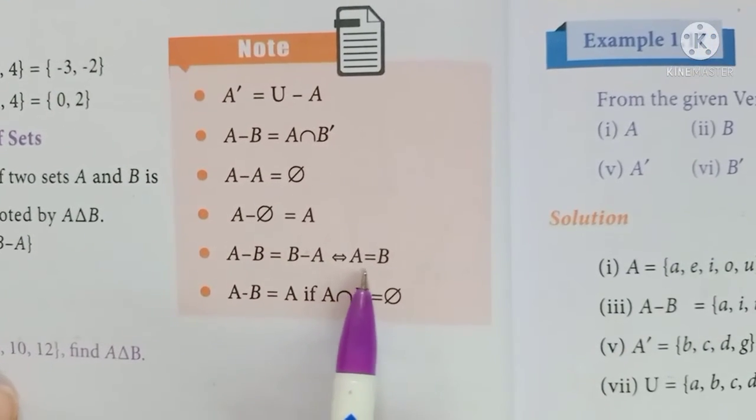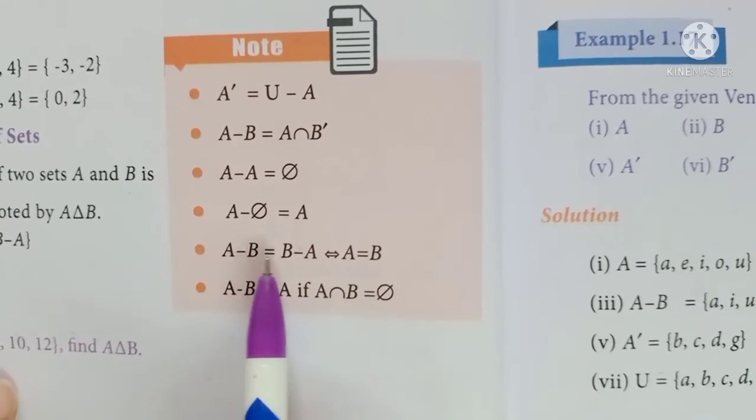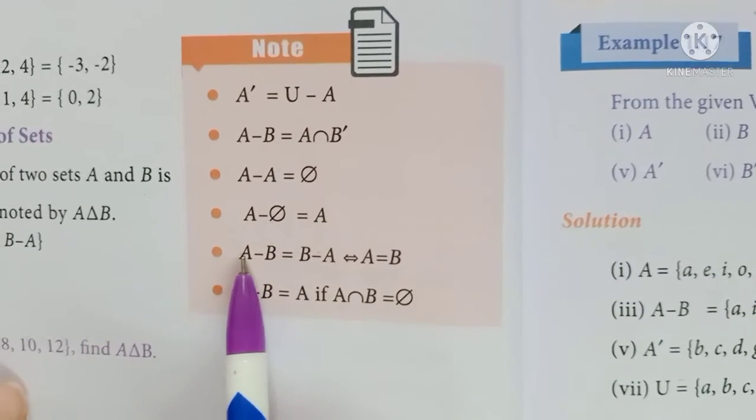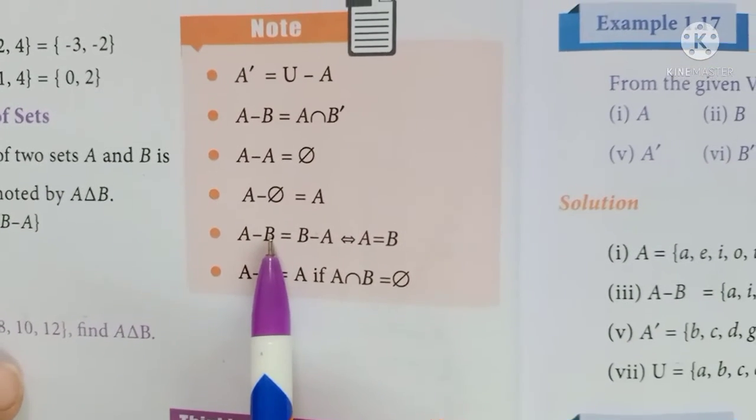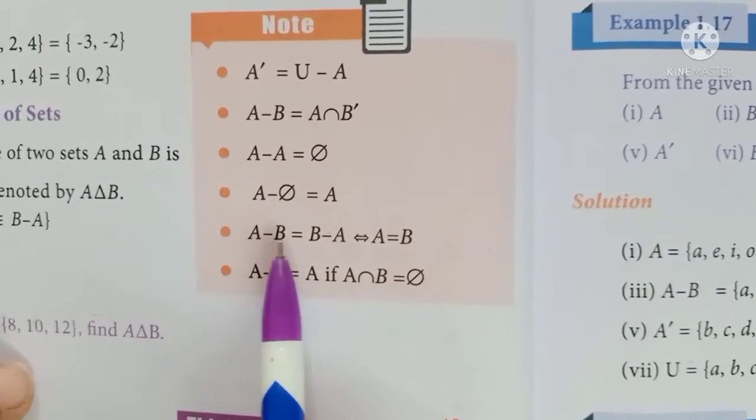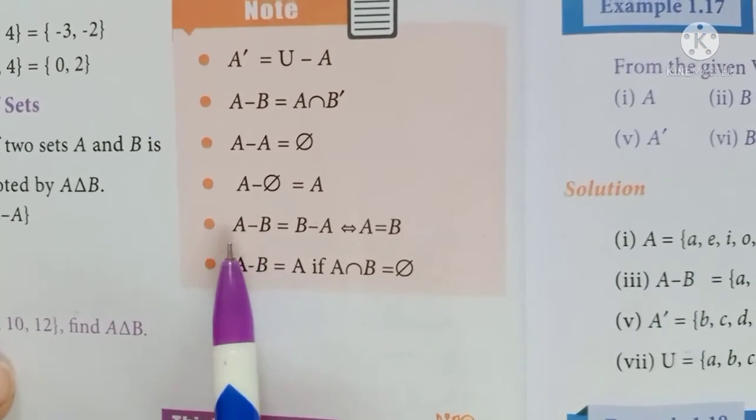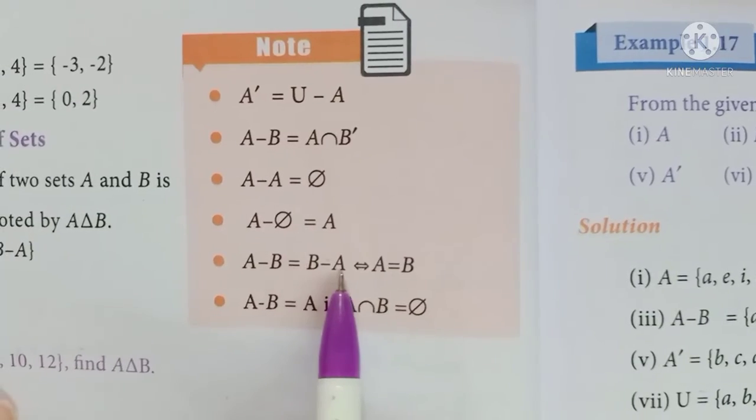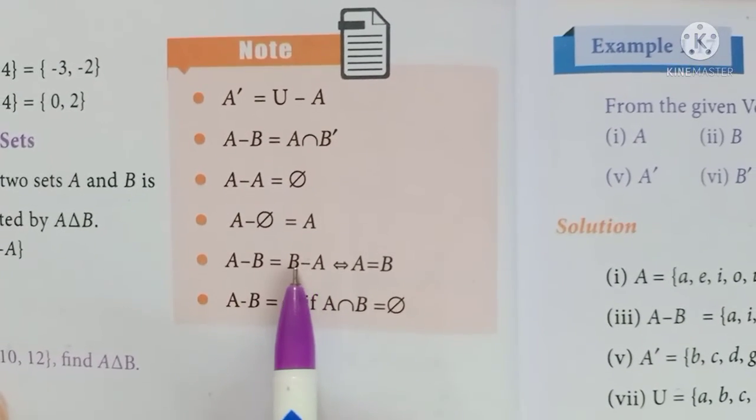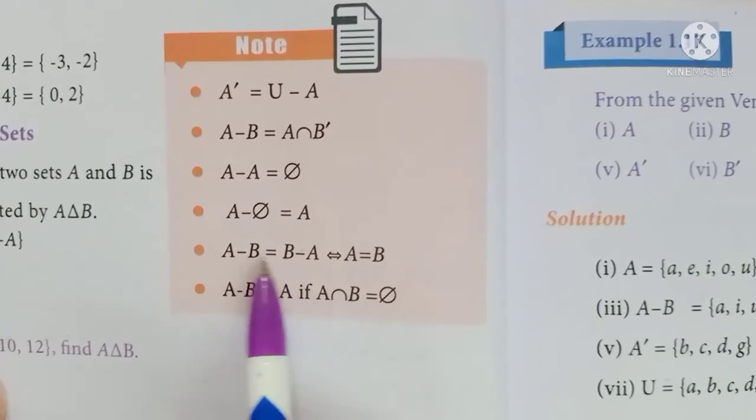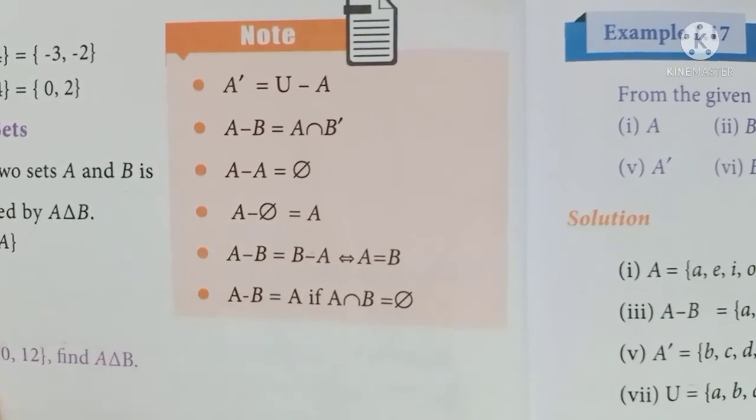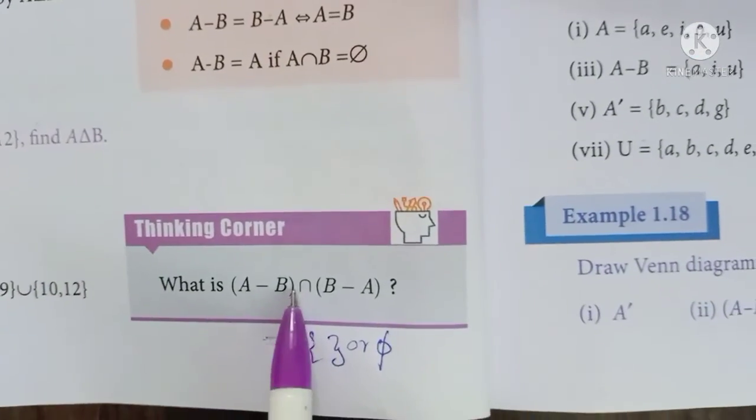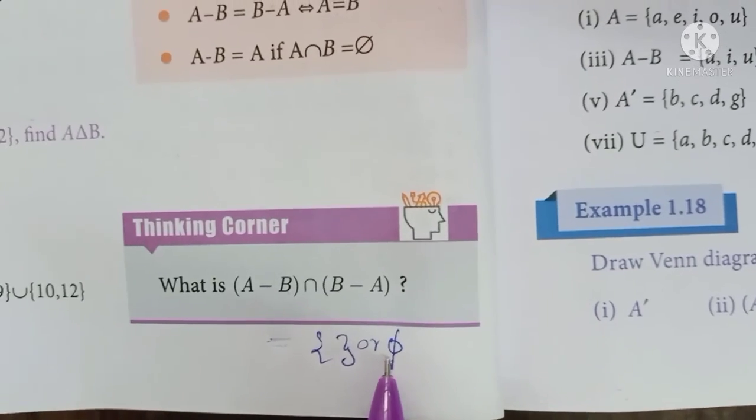If we have a set A-B and B-A with no common elements, the intersection is a null set. This demonstrates the property that (A-B) intersection (B-A) equals the empty set.